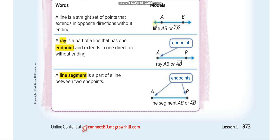Let us repeat: when you see two arrows it is a line — this is how you represent it. When you see just a single arrow it is a ray — this is how you represent it. When you see no arrows, just a small part of a line, it is a line segment — this is how you represent it. Now let us start the examples.